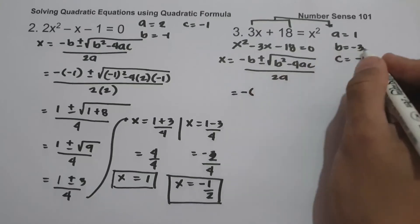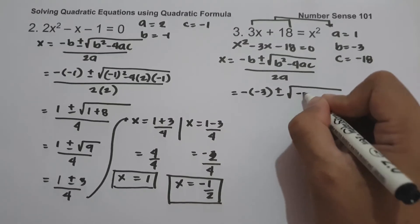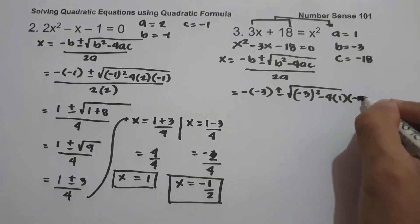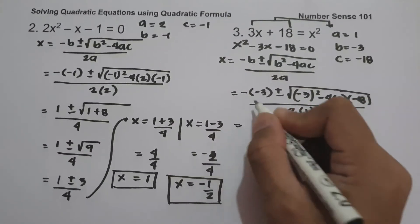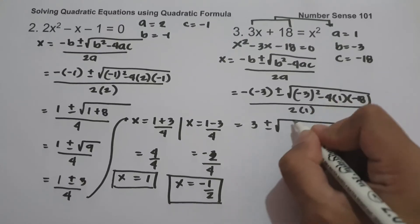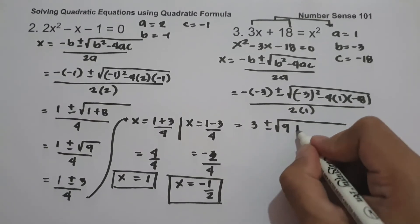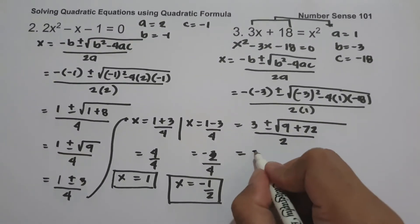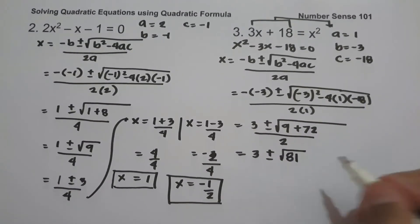So we have negative b, that is negative 3, plus or minus b squared — negative 3 squared — minus 4 times a, that's 1, times c, that's negative 18, all over 2 times 1. Negative times negative 3 is positive 3, plus or minus: negative 3 squared is positive 9; negative 4 times 1 is negative 4; negative 4 times negative 18 is positive 72; so we have 3 plus or minus the square root of 9 plus 72, that is 81, all over 2.